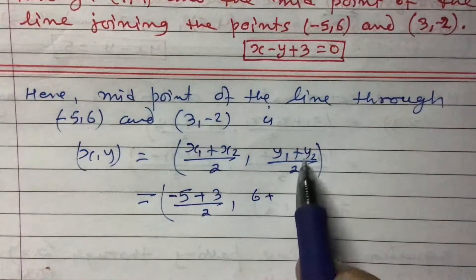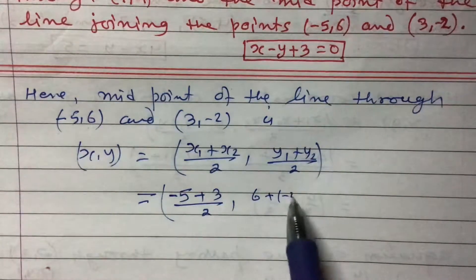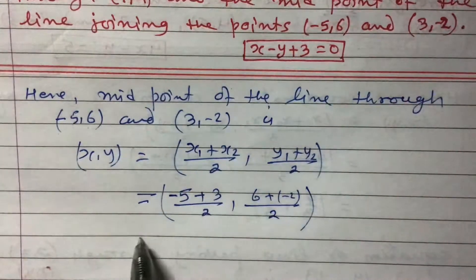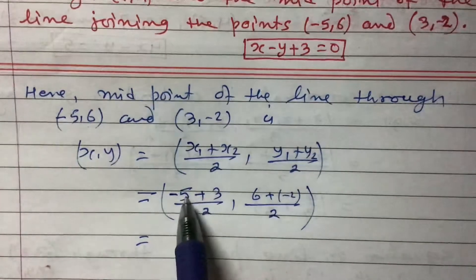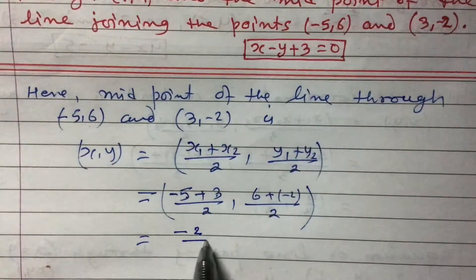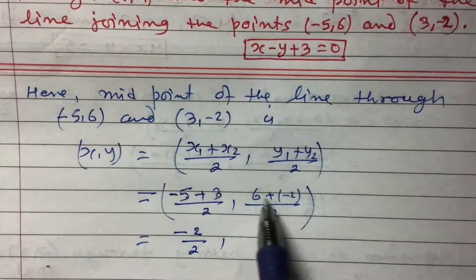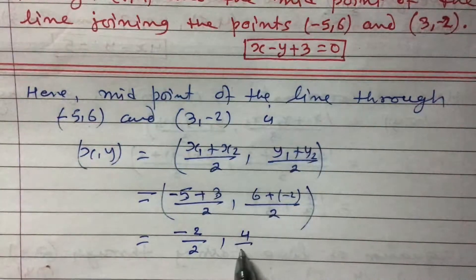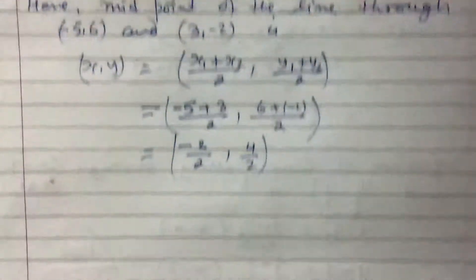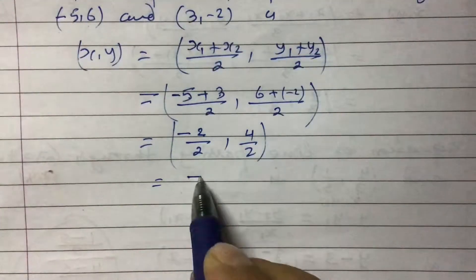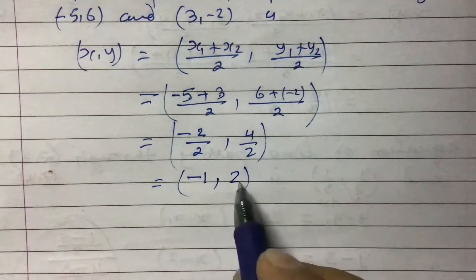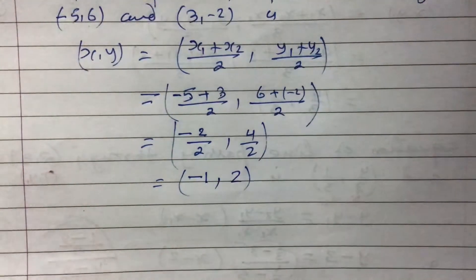Substituting the values: x-coordinate is (-5 plus 3) divided by 2, which gives -2 divided by 2, equals -1. The y-coordinate is (6 plus -2) divided by 2, which gives 4 divided by 2, equals 2. So the midpoint is (-1, 2).